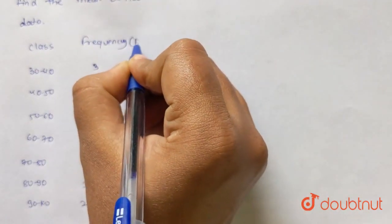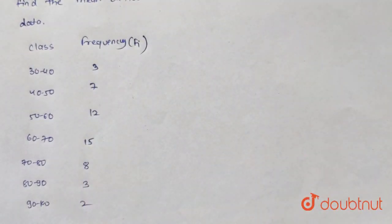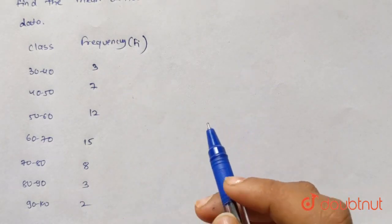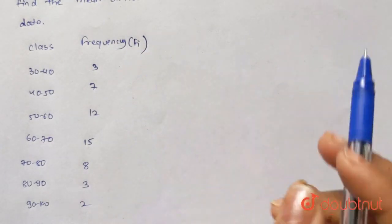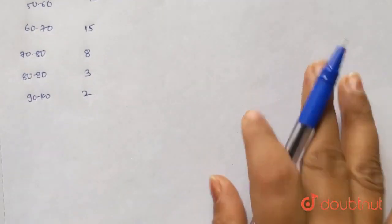Frequency is represented by FI. We have to find out mean deviation about the mean. So first of all, we will find out mean.